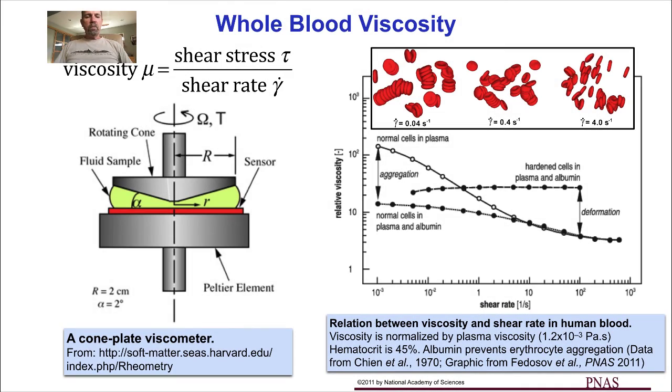Welcome back. We have now learned that the viscosity mu of a fluid is the ratio of the shear stress tau to the shear rate gamma dot.